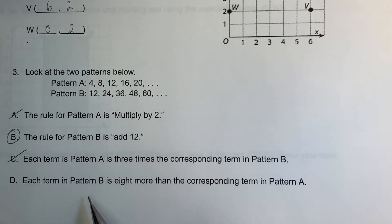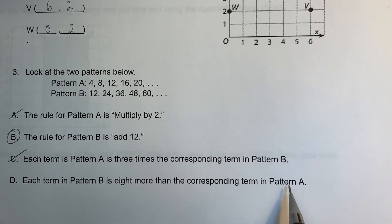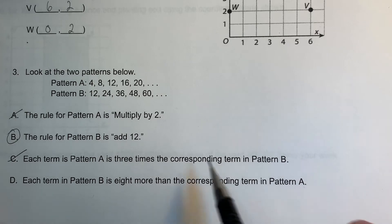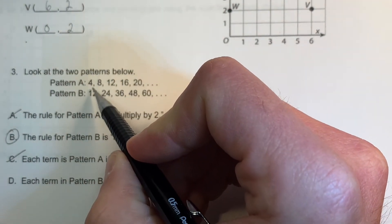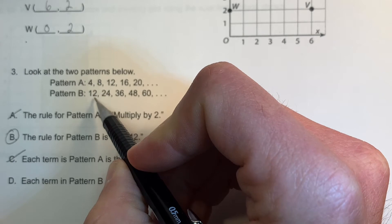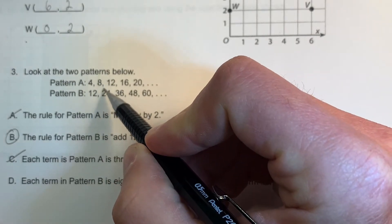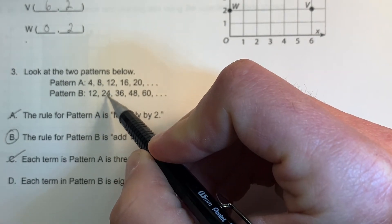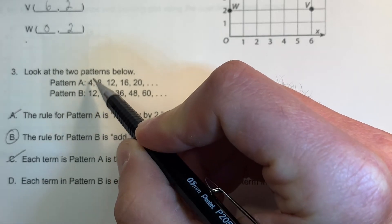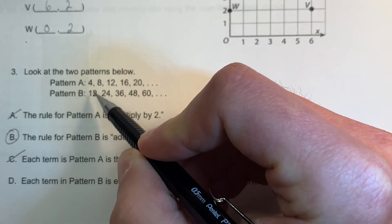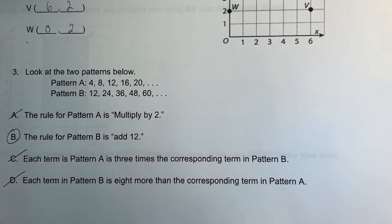Each term in pattern B is 8 more than the corresponding term of pattern A. If we look at B: 4 plus 8 is 12 — that is correct — but 8 plus 8 is 16, not 24, so that works only for the first pair but not the rest. So B will be the only good answer for number 3.